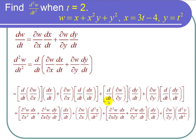For the next term, using the chain rule again: d over dt of del w del y equals del squared w over del x del y times dx over dt, plus del squared w over del y squared times dy over dt. Then we still have dy over dt, plus del w over del y times d squared y over dt squared. That completes the chain rule expansion for the second derivative.